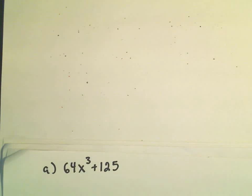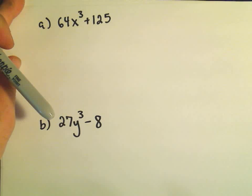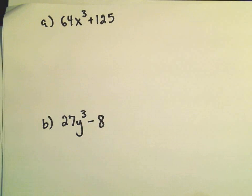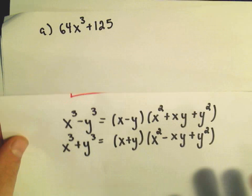Let's do a couple examples. The first one I'm going to do here is 64x³ plus 125, and then we've got 27y³ minus 8. Let me see if I can bring my formula back in here real quick.